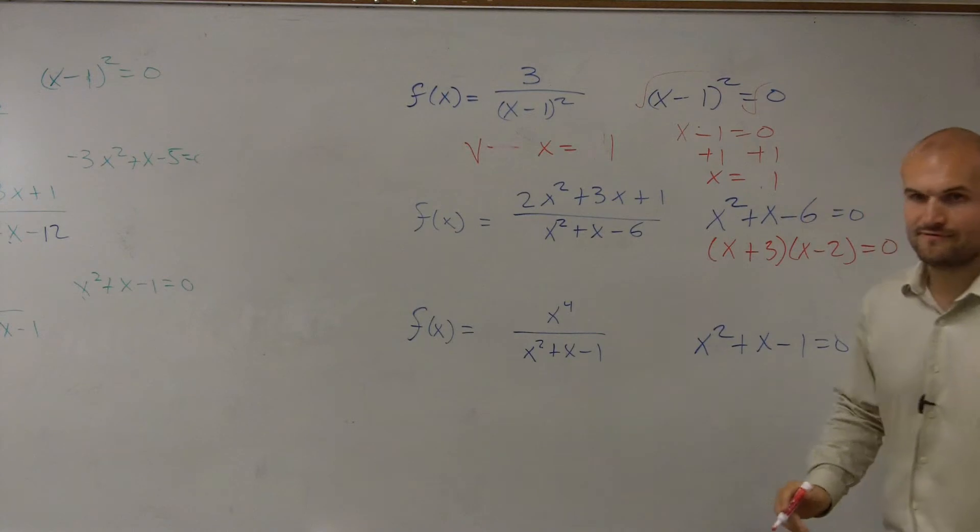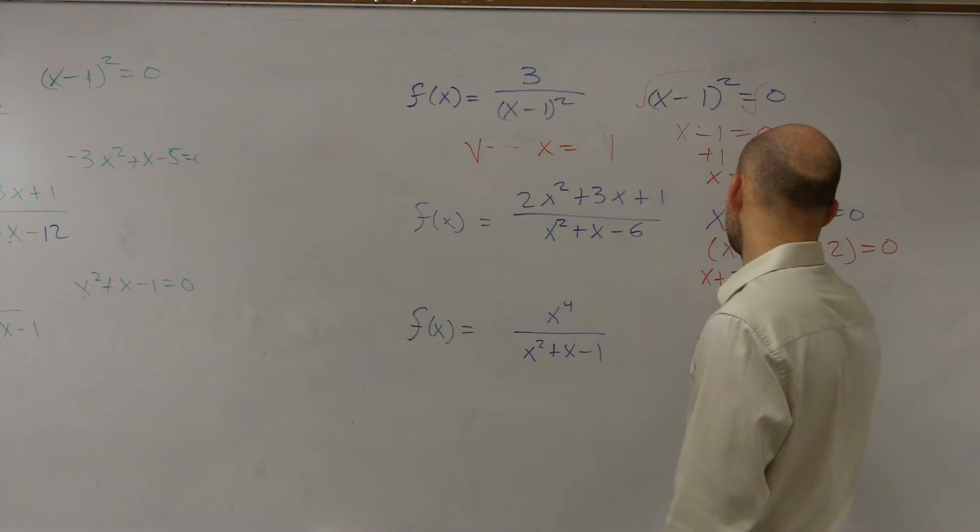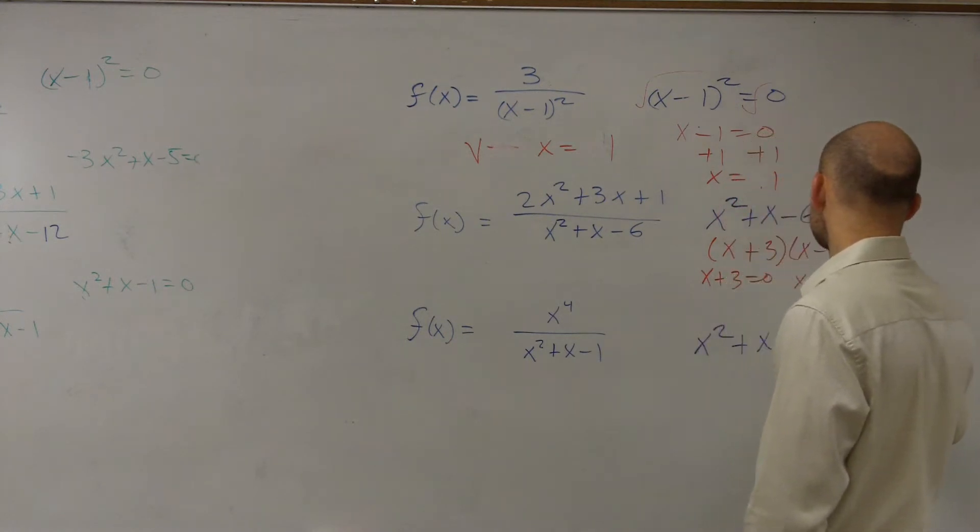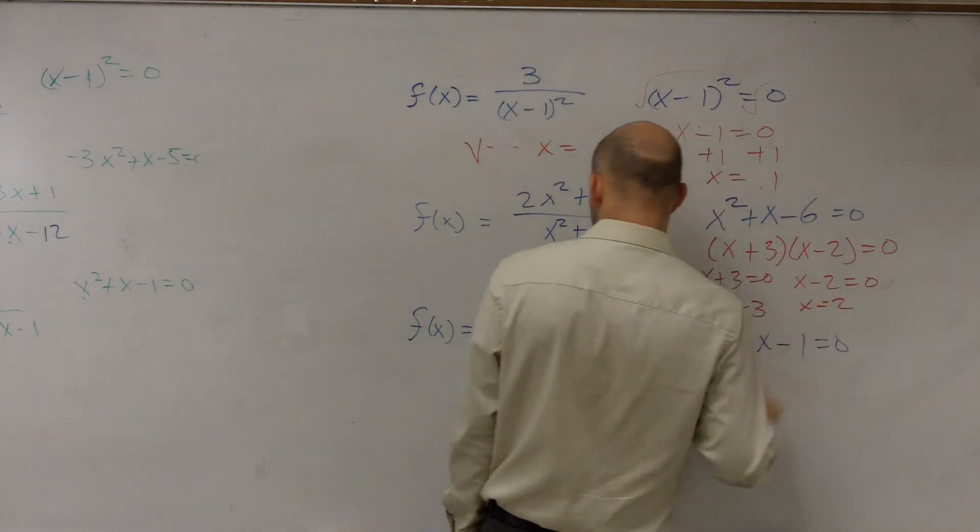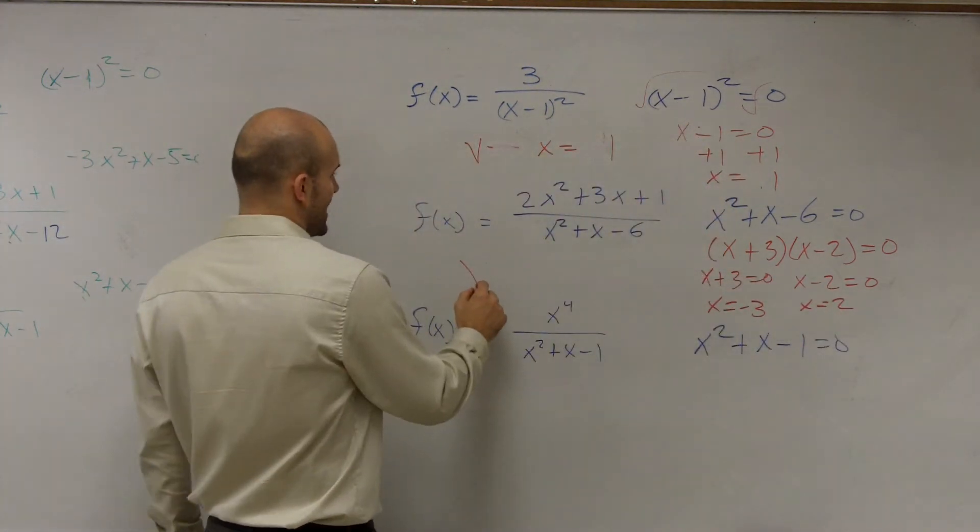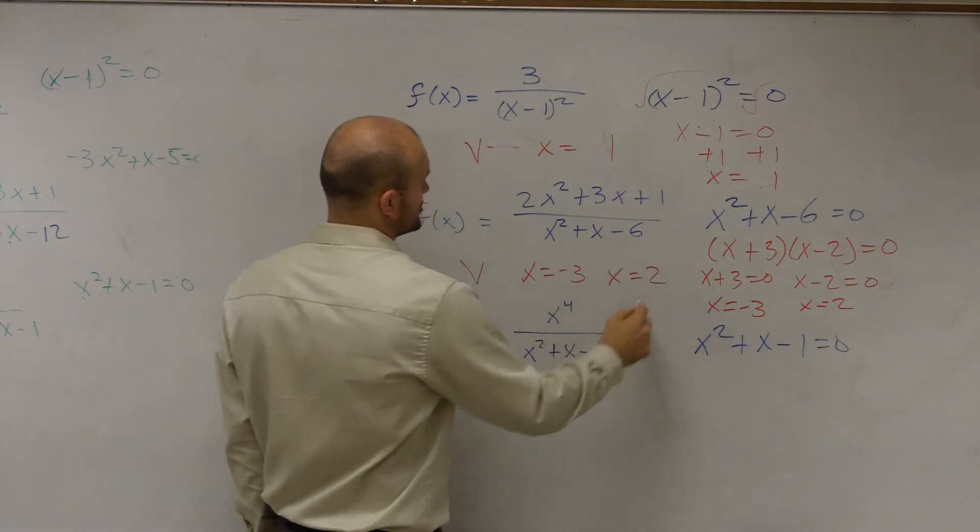Now why do we factor? The only reason why we factor is when factoring we get rid of our x squared, but then we can now use the zero product property. So you can say x plus 3 equals 0, x minus 2 equals 0. x equals negative 3, x equals 2. So now your vertical asymptotes are when x equals negative 3 and x equals 2.